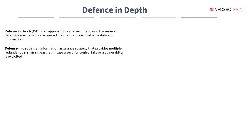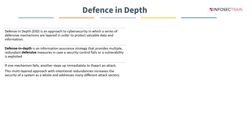You will find that different security controls are implemented at different layers in order to make penetration difficult for an attacker. If one mechanism fails, the other steps up immediately to block or stop an attack. This multi-layered approach with intentional redundancy increases the security of a system as a whole and addresses many different attack vectors.